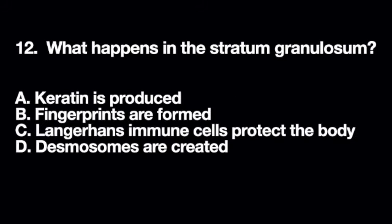What happens in the stratum granulosum? A. Keratin is produced B. Fingerprints are formed C. Langerhans immune cells protect the body D. Desmosomes are created